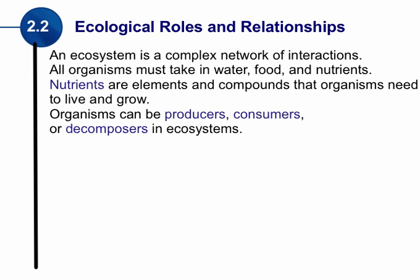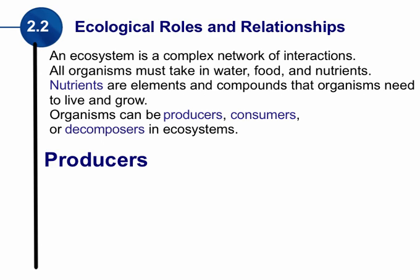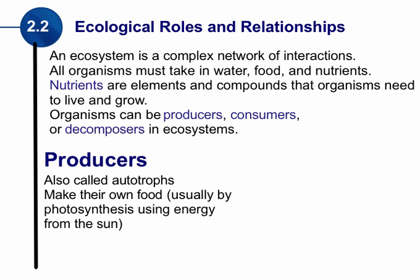Let's first start with a producer. A producer sometimes goes by another, more formal word called an autotroph — producer and autotroph just mean the same thing. A producer is a type of organism that can make their own food. We're not talking about going into your kitchen — we're talking about an organism that is equipped to make its own food.